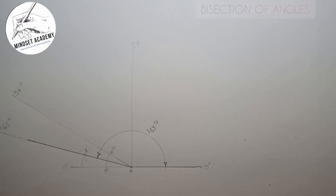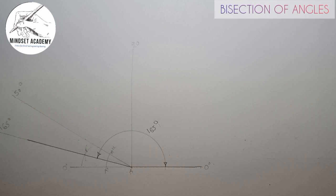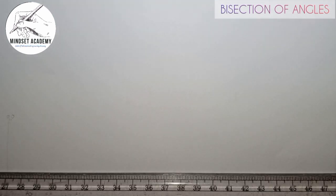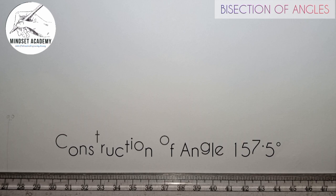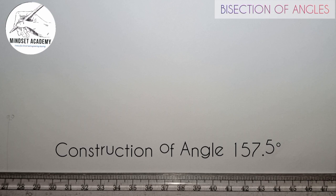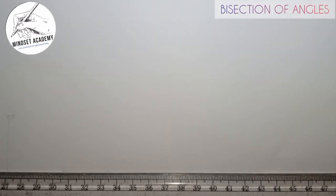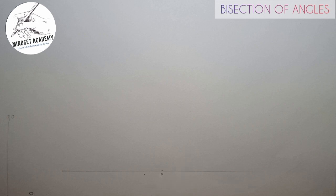Now in the next video, we are going to be constructing angle 157.5. So let's see how that will be. Now to construct angle 157.5, what you are going to do is follow the same protocol. You draw a horizontal line this way. You pick a point on that line — let's say I'm picking this point — I'll call it point A.